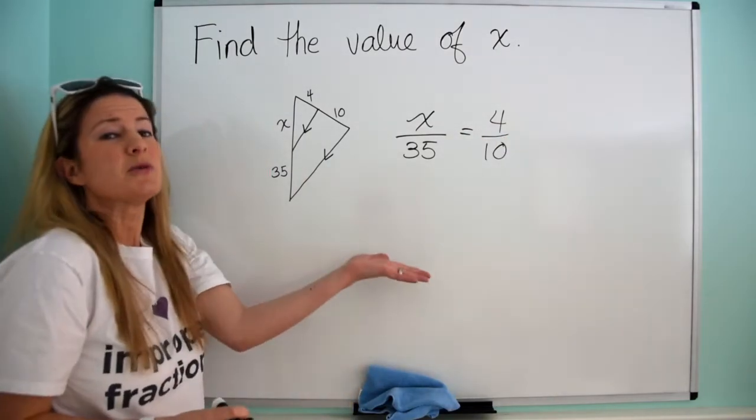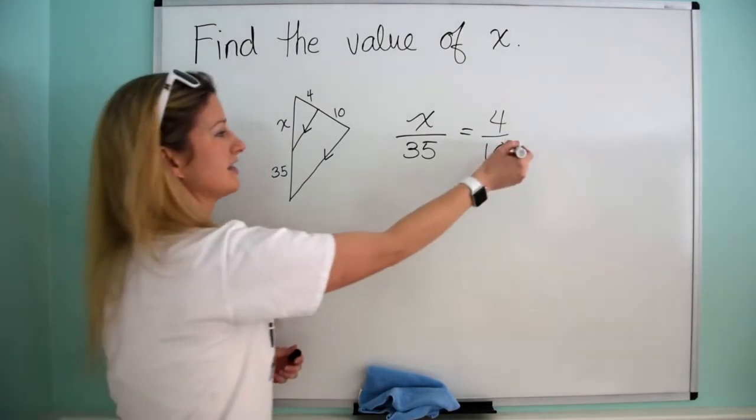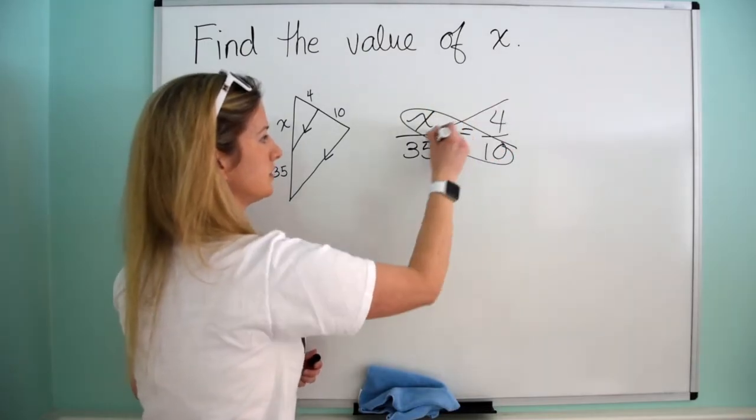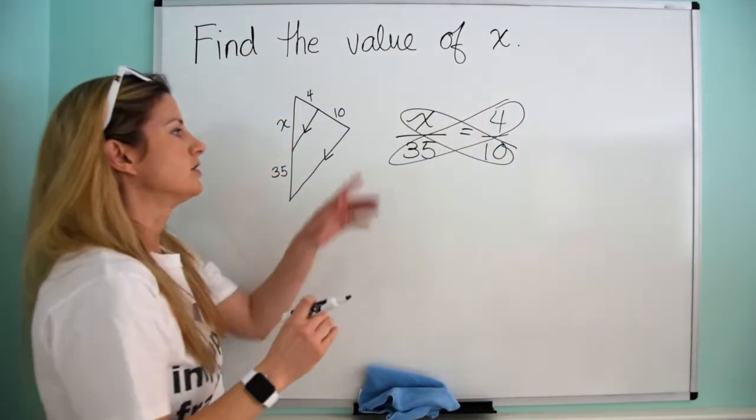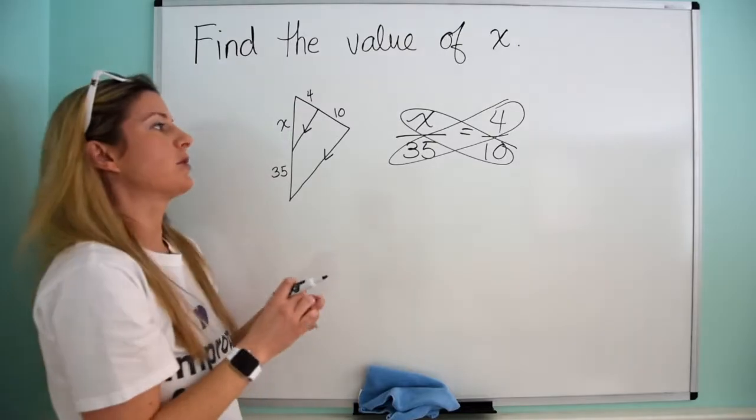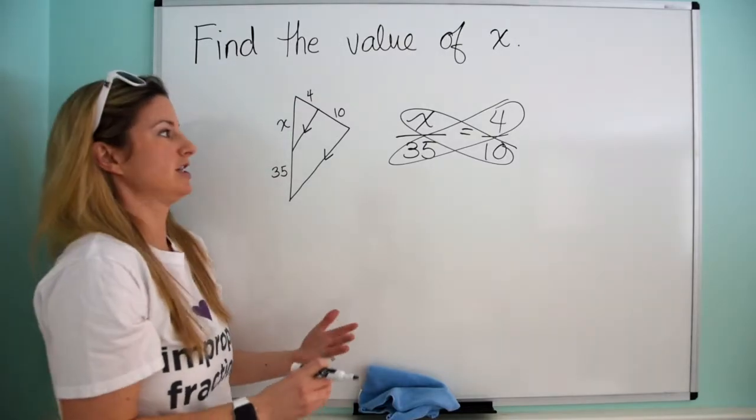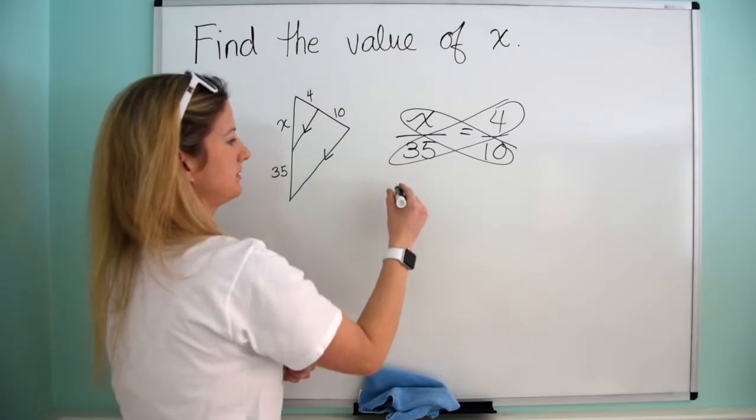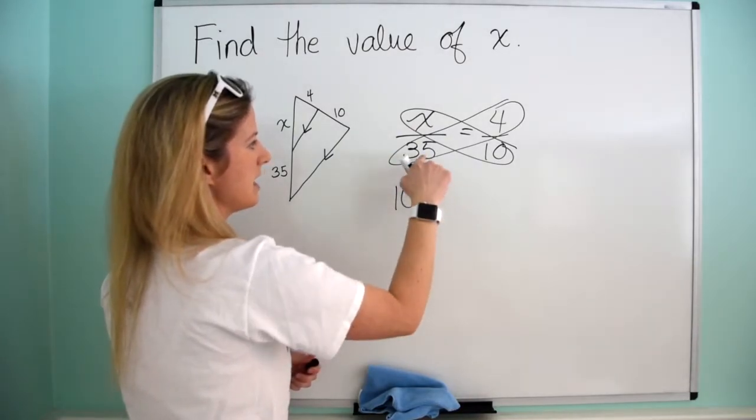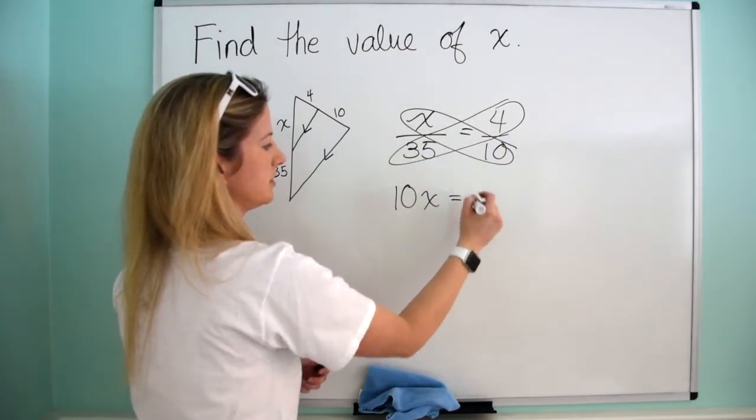Awesome. And now it's super easy to solve for x. I'm just going to take the cross products and set them equal to each other. Don't forget to show what your cross products are so you don't make a mistake. I even show my cross products. So 10 times x is 10x, and 35 times 4 is going to be 140.